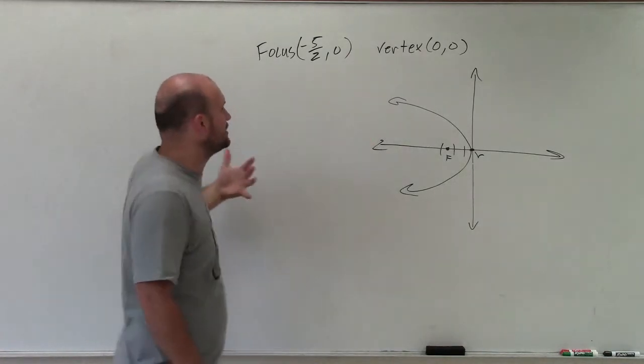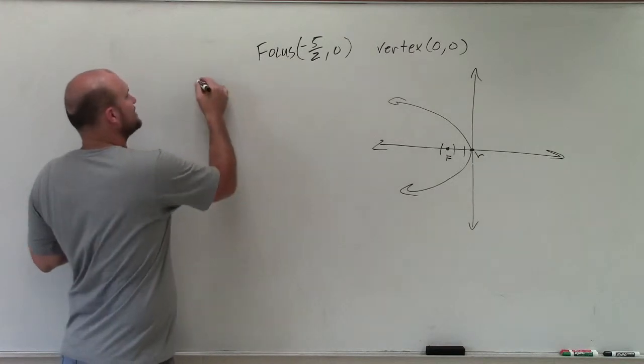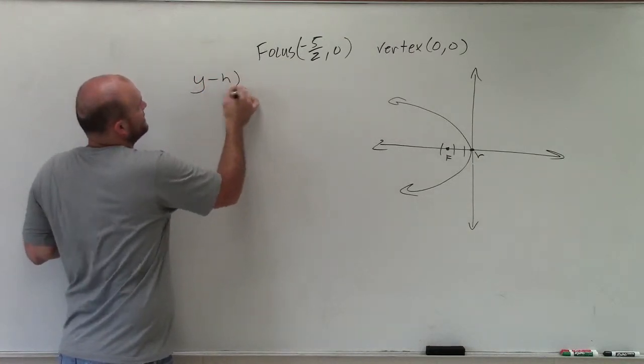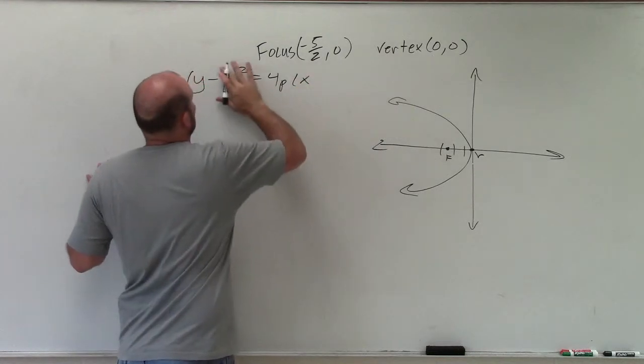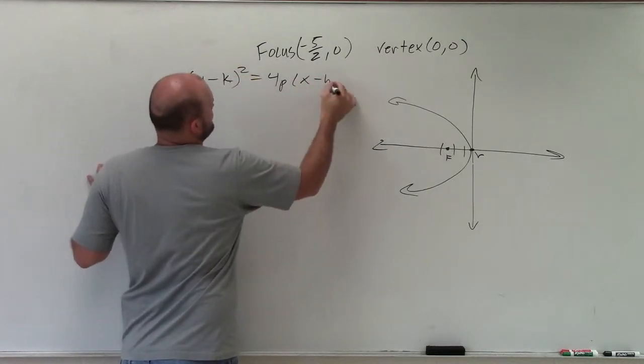Since we know it opens up to the left, I know that my y is going to be squared. So it's going to be y minus k squared equals 4p times x minus h.